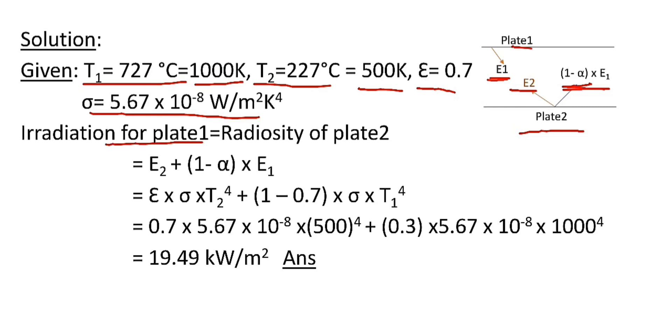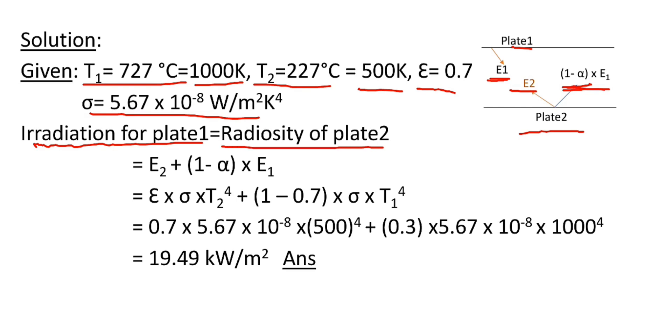So the irradiation for plate 1 is equal to radiosity of plate 2, and the meaning of radiosity of plate 2 is total amount of radiation energy emitted by plate 2. So the total energy emitted by plate 2 is equal to E₂ plus this amount of energy.